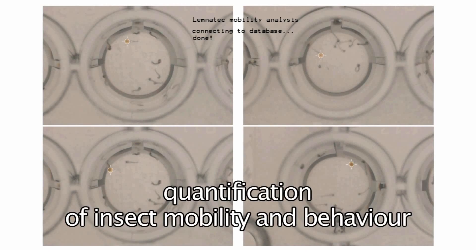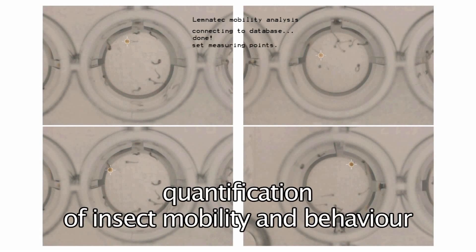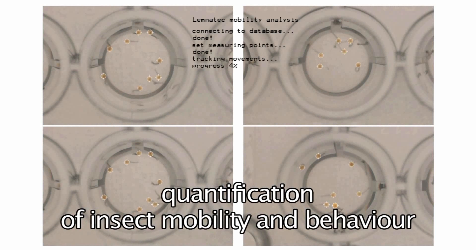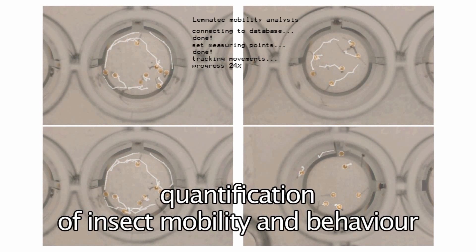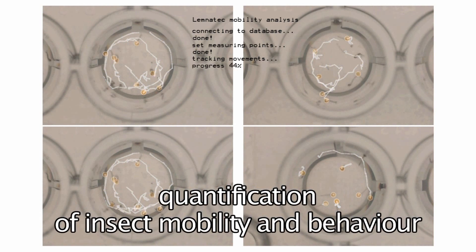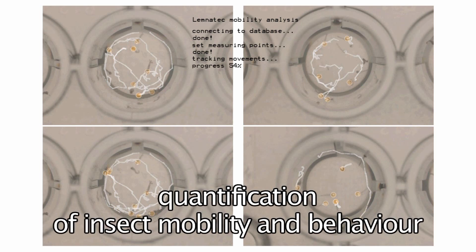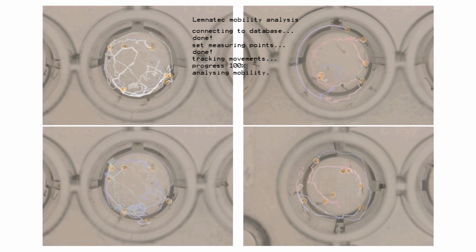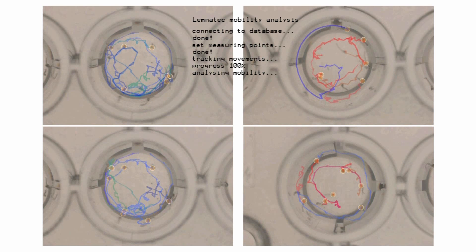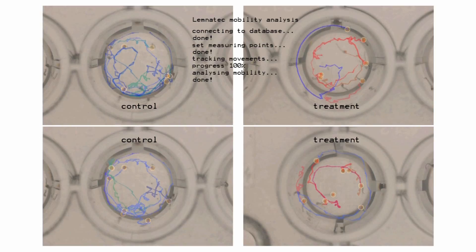Following the high degree of automation reached in chemical and genetic analyses, the Lemnatec high-throughput and high-content phenotyping system for small living organisms provides reliable statistical analyses and consequently, a better understanding of organism reactions to specific chemicals or test conditions.